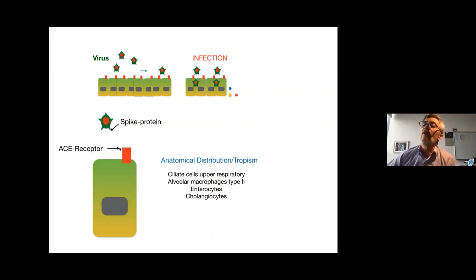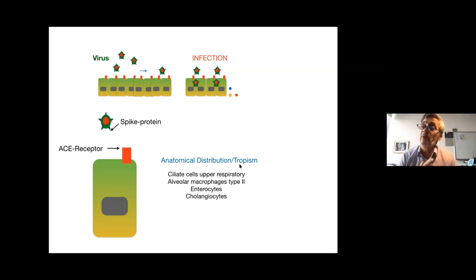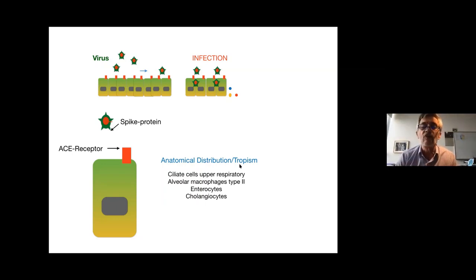One important point about the ACE2 receptor is its anatomical distribution, which tells us the real tropism of the virus. ACE2 is present on the ciliated cells of the upper respiratory tract and on alveolar macrophages — which explains why the lungs are one of the organs most targeted. It's also present in enterocytes, explaining why viral RNA can be found in feces, and in cholangiocytes. It has not been seen in hepatocytes. Kidney cells also have ACE2 receptor, and data are now suggesting a kidney component in COVID-19.